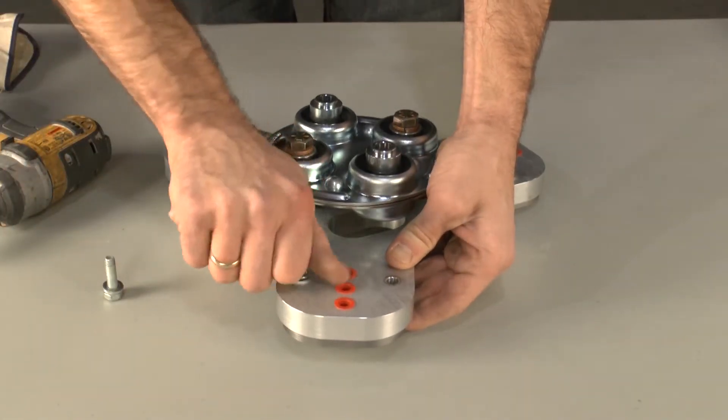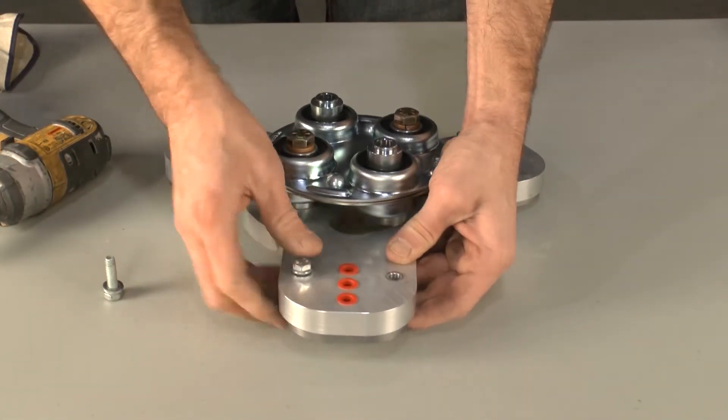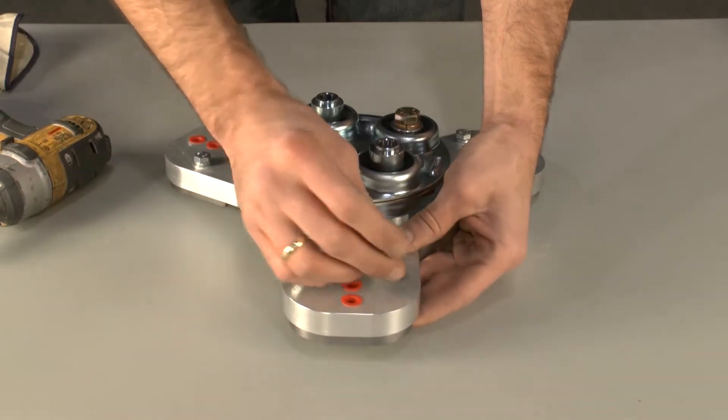Hand start each bolt until tight, and then tighten with the impact wrench or ratchet.